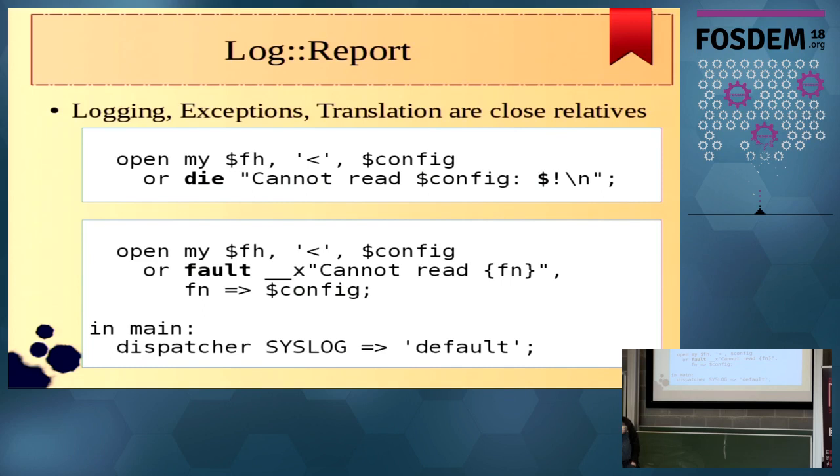And then, so instead of die, you use in this case fault, and you don't have to specify dollar exclamation mark because faults are external causes so they always have a dollar exclamation mark. And the other big step which I made was I here create an exception. Yes, it will be a die, but things like translations and interpolation of these variables, they are postponed as long as possible. They are postponed until the errors leave your program.